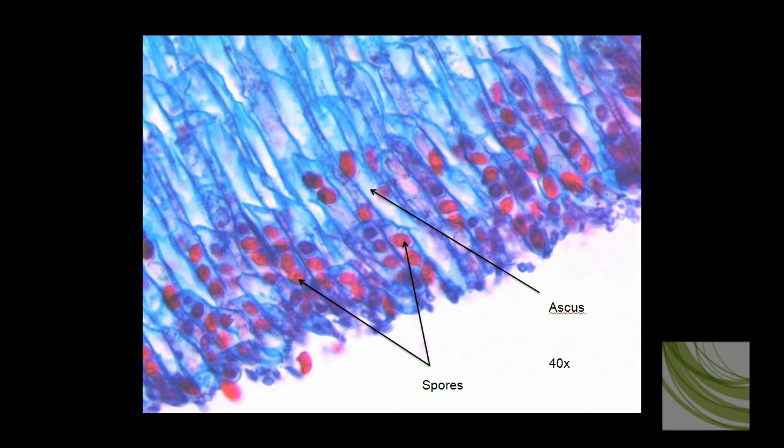The ascus originally begins as a single dikaryotic cell, meaning it has two nuclei. These two nuclei will fuse and form a single diploid nucleus, which we call a zygote.